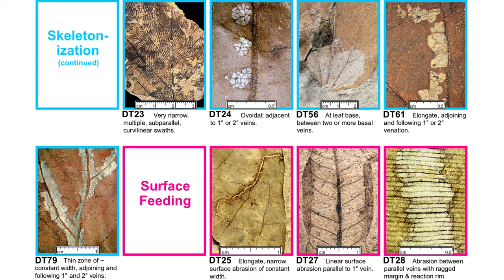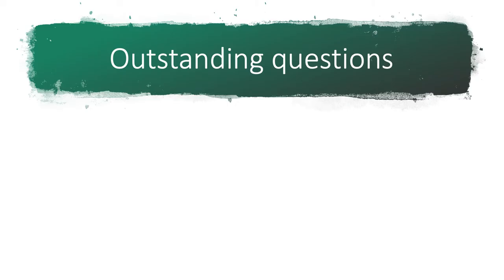So we can look at how insect feeding changes during extinctions, during climate change, during rain shifts, during the radiation of new plant groups such as angiosperms. The damage guide really was a breakthrough in terrestrial paleoecology, but there are still a number of outstanding quantitative and statistical questions.